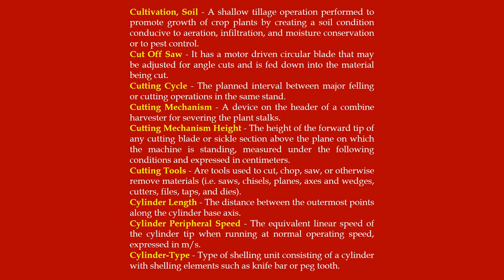Cutoff saw: a motor driven circular blade that may be adjusted for angle cuts and is fed down into the material being cut. Cutting cycle: the planned interval between major felling or cutting operations in the same stand. Cutting mechanism: a device in the header of a combine harvester for severing the plant stocks. Cutting mechanism height: the height of the forward tip of any cutting blade or sickle section above the plane on which the machine is standing, expressed in centimeters.